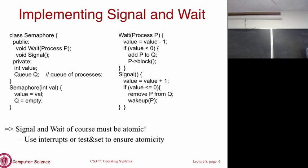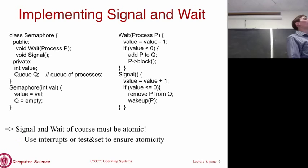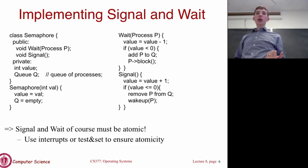We have the same requirements for atomicity that we have with locks. We need to ensure that wait and signal execute atomically — either by disabling interrupts or using test-and-set — to make sure that two threads executing wait or signal at the same time don't break the semaphore's behavior.